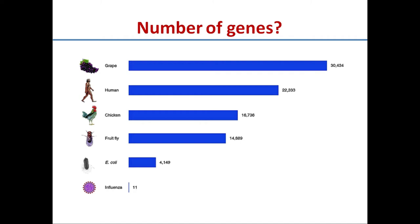For comparison, in grapes we have 30,434 genes; in humans 22,000; in chicken 16,000; in fruit fly 14,000; in E. coli the bacterium 4,100; in influenza virus 11; and in tobacco mosaic virus we have seen three essential genes. So on average, plant viruses have 4 to 10 genes.